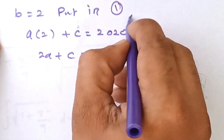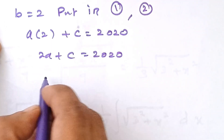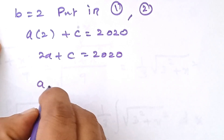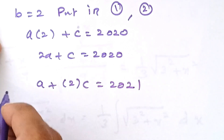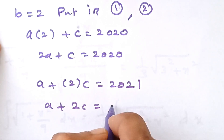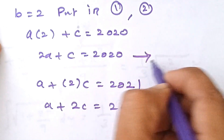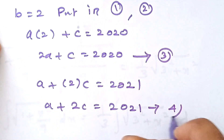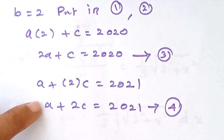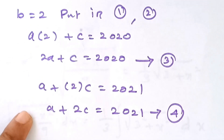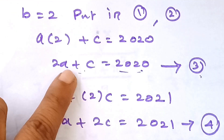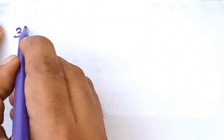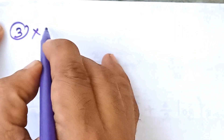Substituting B equals 2 into equation 2 gives A plus 2·C equals 2021. We assign these as equation 3 (2A plus C equals 2020) and equation 4 (A plus 2C equals 2021). Both equations have two variables, A and C. Let us solve equations 3 and 4.